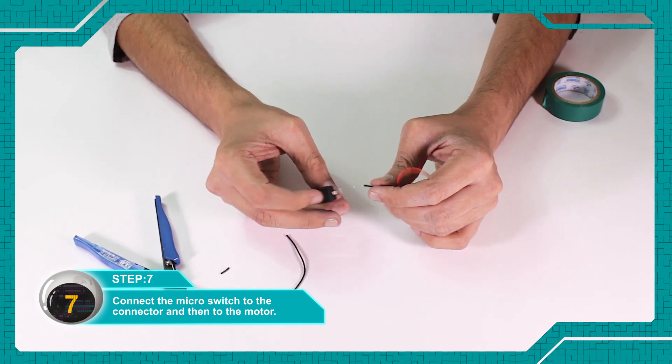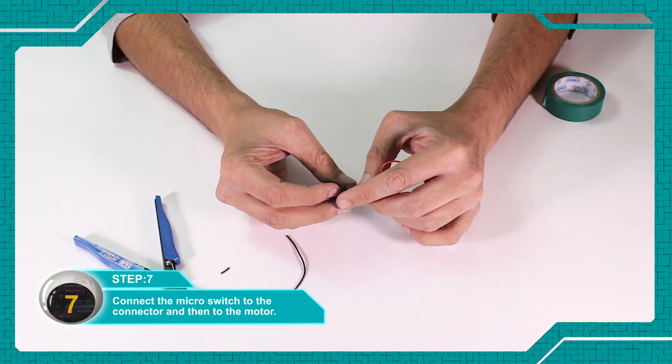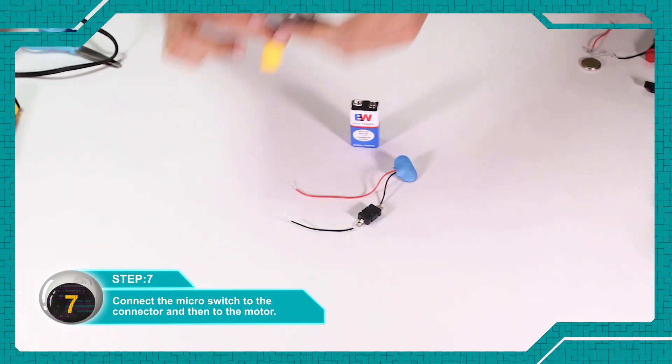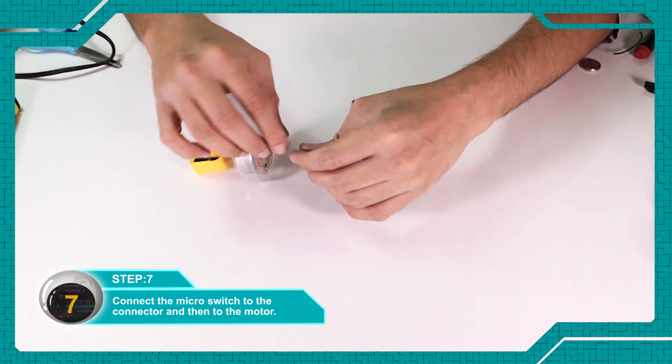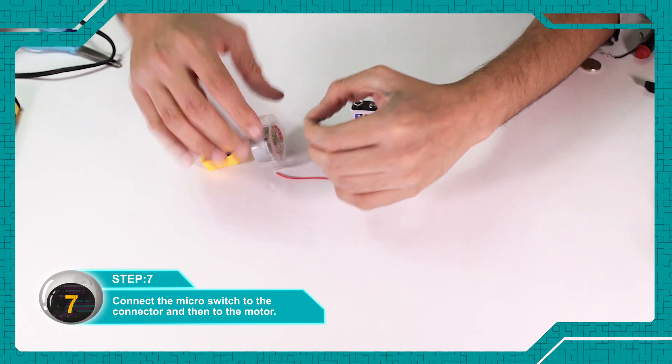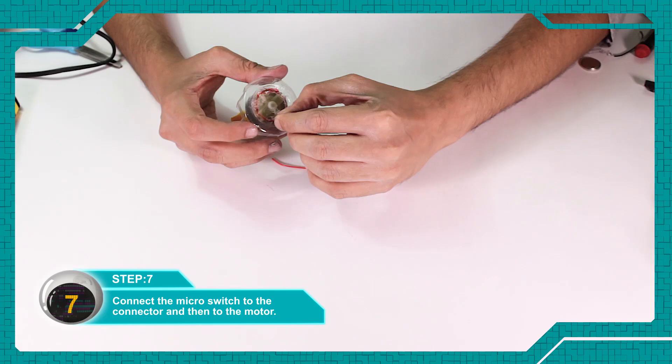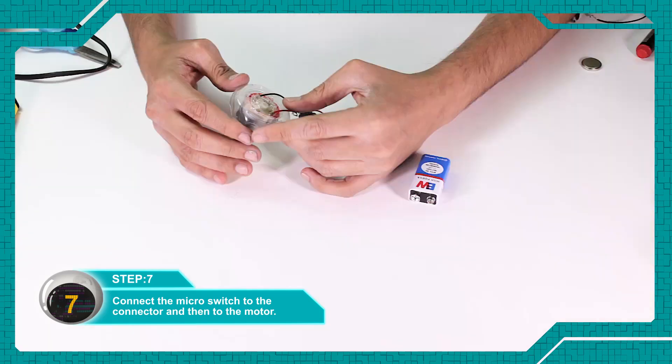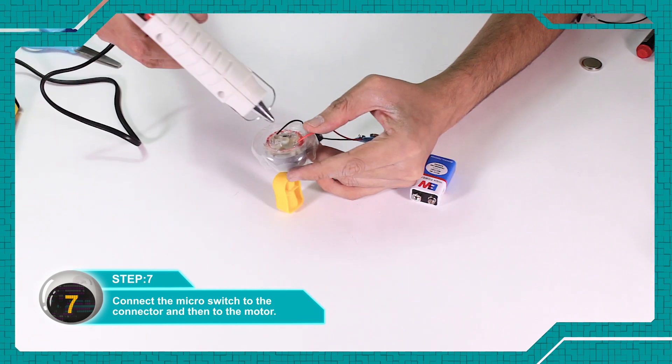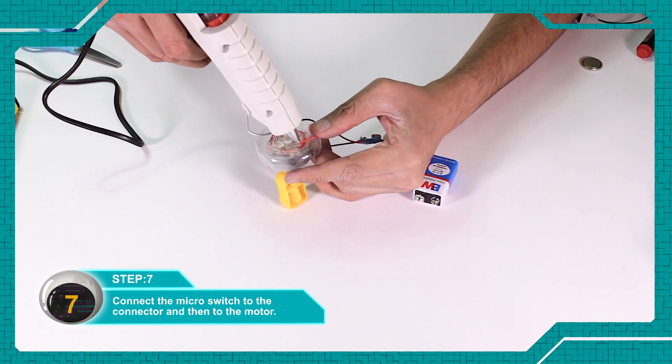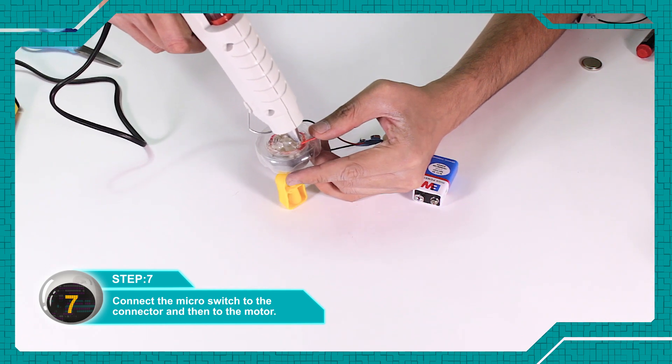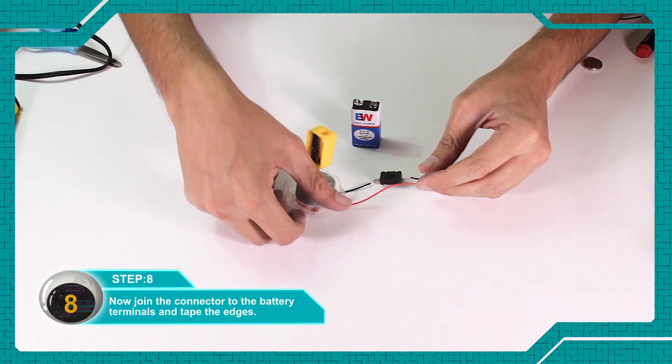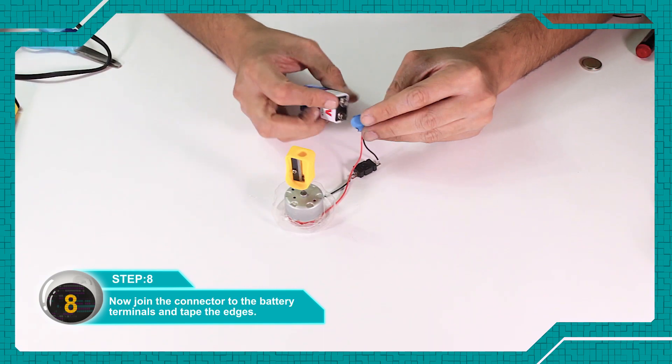Connect the micro switch to the connector, and then to the motor. Now connect the connector to the battery terminal.